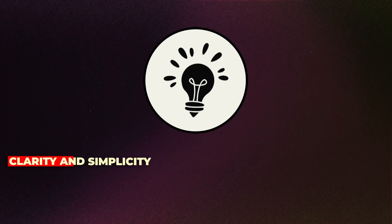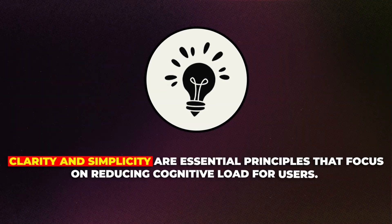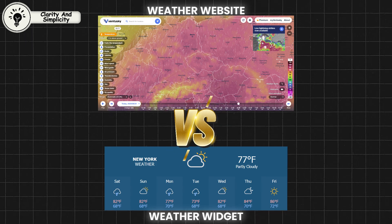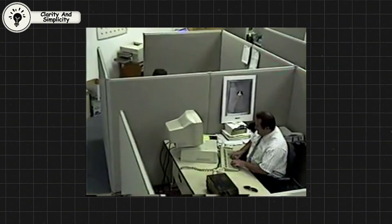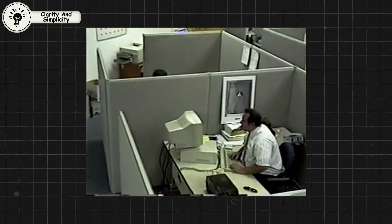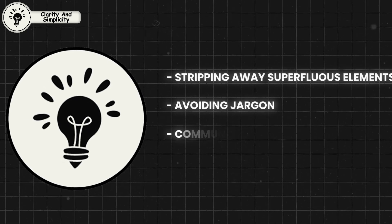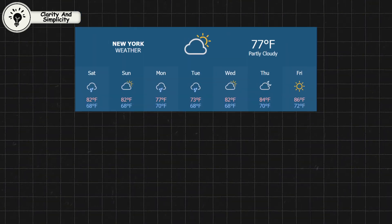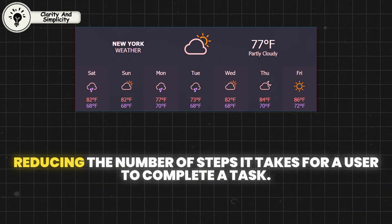Clarity and simplicity are essential principles that focus on reducing cognitive load for users. A clear and simple design ensures that users can quickly understand the interface, find what they need, and perform tasks without unnecessary complications. In UX or UI design, clarity involves stripping away superfluous elements, avoiding jargon, and communicating with users in a straightforward manner. Simplicity, on the other hand, involves reducing the number of steps it takes for a user to complete a task.